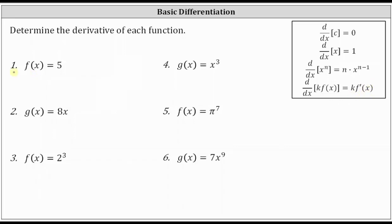For number one, we have f of x equals five. Well, five is a constant, and therefore f prime of x is equal to zero.